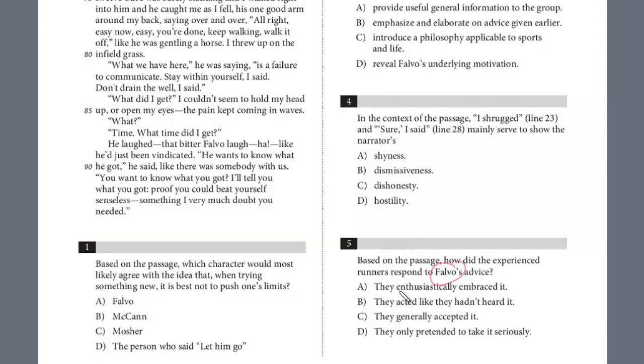Enthusiastically embrace it - this is too extreme. We don't have evidence of that. And just in general, avoid extreme choices. They're usually just red herrings. They acted like they hadn't heard it - we don't have any evidence of that. They generally accepted it, right, because they were smooth with sustained controlled power. They only pretended to take it seriously. It's definitely C here. And so it's a little bit of an inference question. If they don't have a verbal response, watch the actions.